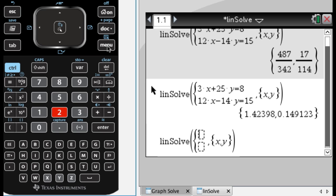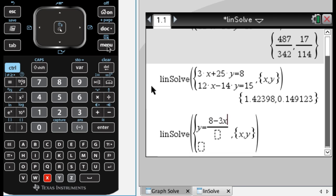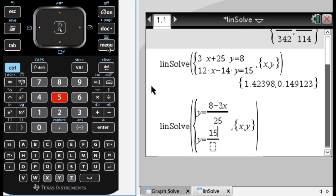Let's say that I did go through and solve for Y. So let me do this kind of on the fly here. So I have 8 minus 3X and then over 25. So that's the first equation solved for Y. And then I have Y equals, so it'll be 15 and then minus 12X over negative 15. Nope, over negative 14.